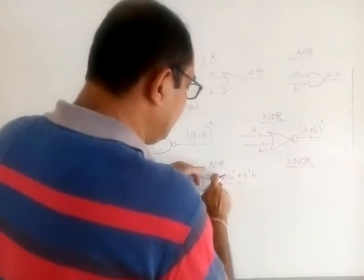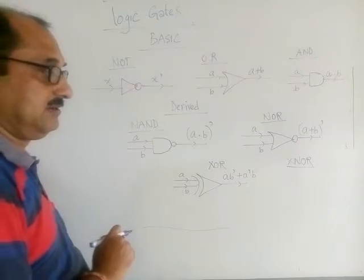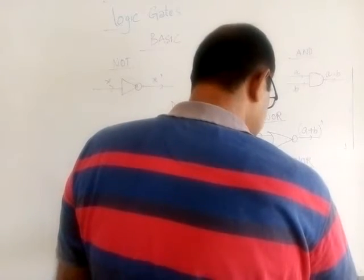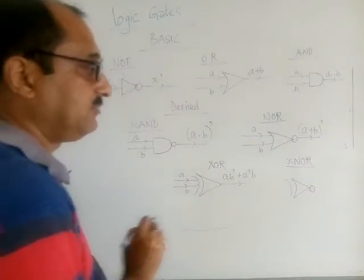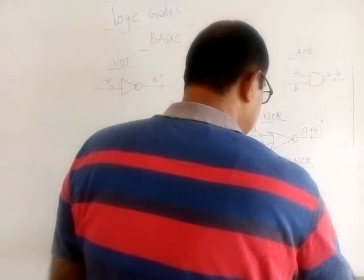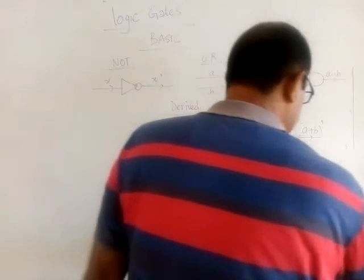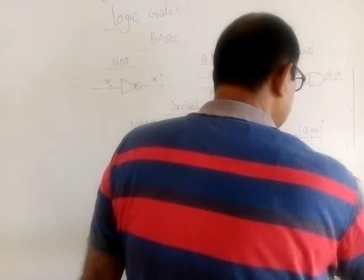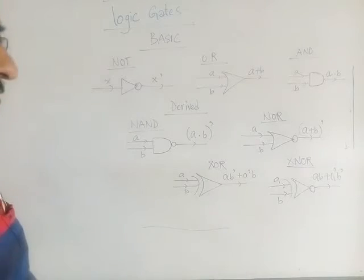The XNOR gate — X-NOT gate — is like the XOR gate but with a circle added. If you pass two currents A and B, then the output will be A B plus A complement B complement. That is the output produced by the XNOR gate.